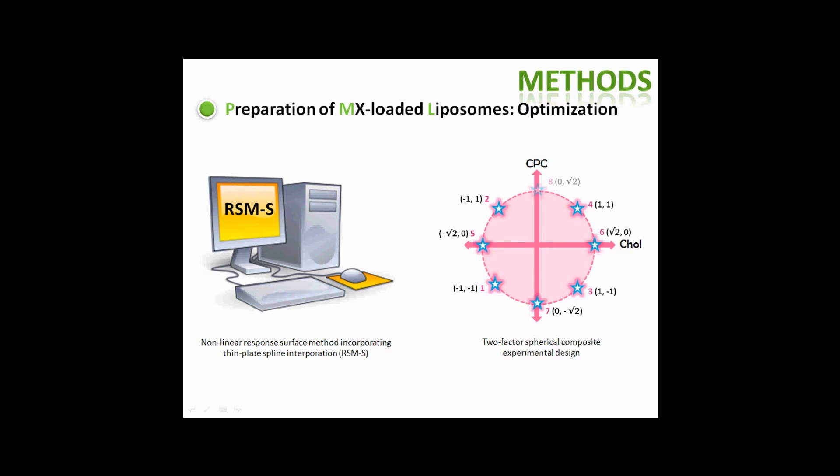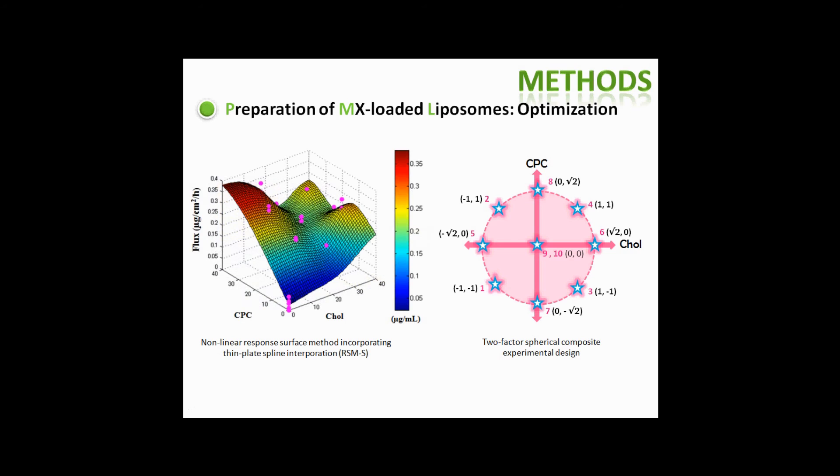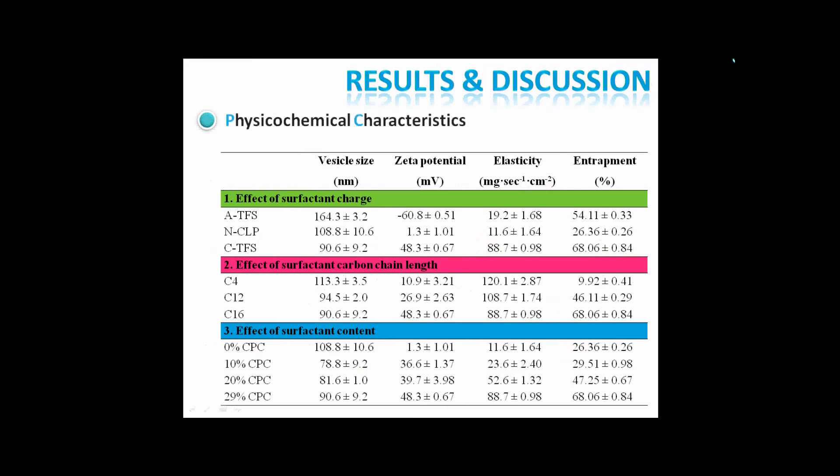The vesicle composition ratio was obtained from a two-factor spherical second-order composite experimental design. By using a response surface method incorporating multivariate spline interpolation, RSM-S, the results indicated that the surfactant factors significantly affected the vesicle size, zeta potential, elasticity and entrapment efficiency of liposome formulations.